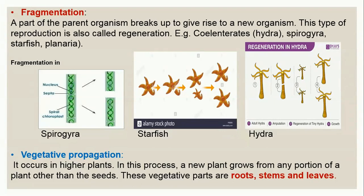The next type is fragmentation. In fragmentation, a part of the parent organism breaks off to give rise to a new organism. This type of reproduction is also called regeneration. It usually occurs in organisms such as Hydra, polyps, and can also take place in Spirogyra, starfish, and Planaria. Images show fragmentation in Spirogyra, starfish, and Hydra — a part of the body breaks off and later develops into a new offspring.